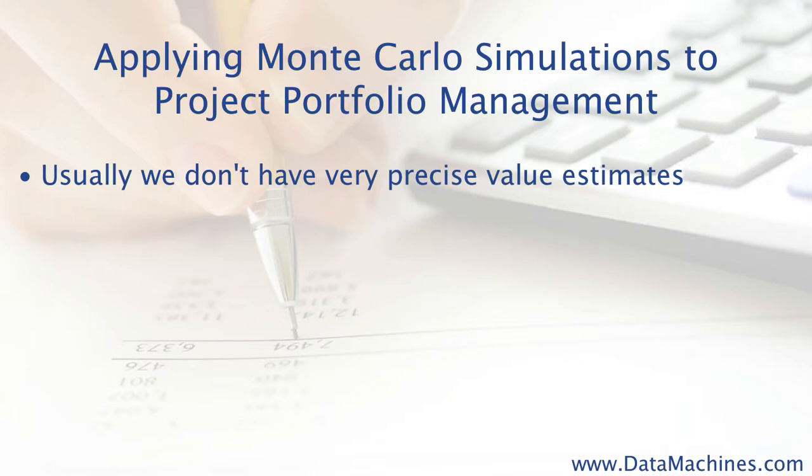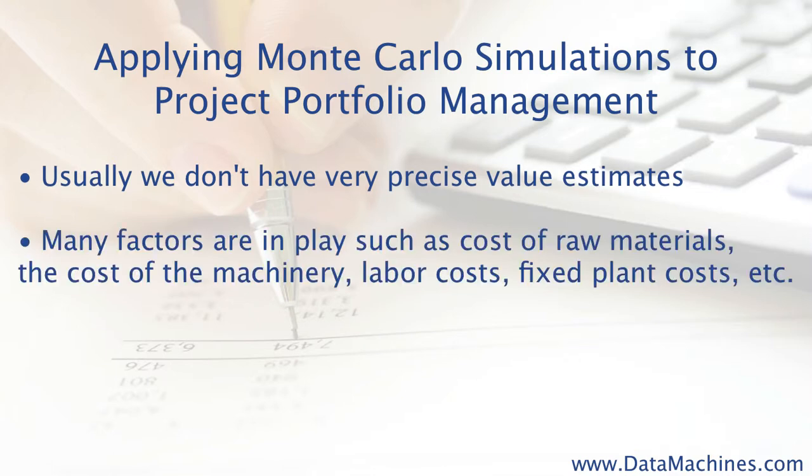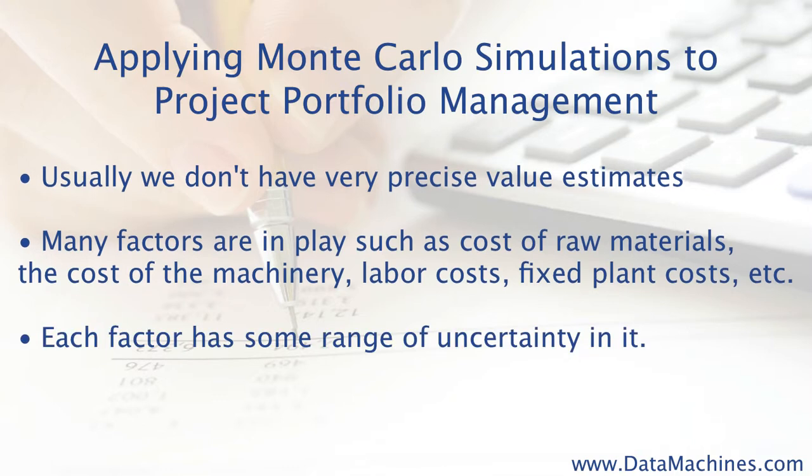For example, if we're trying to determine the cost of manufacturing of a new widget, there are a lot of factors which go into making that cost calculation, such as cost of raw materials, cost of machinery, labor costs, fixed plant costs, and so forth. In each one of these factors, there is a range of uncertainty, and this makes it impossible to come up with an exact value that has any meaning, so in order to better estimate the value for the attributes, you can assign a range of uncertainty for each one, and then metaphorically roll the dice a few thousand times to get a distribution of outcomes for the attributes.